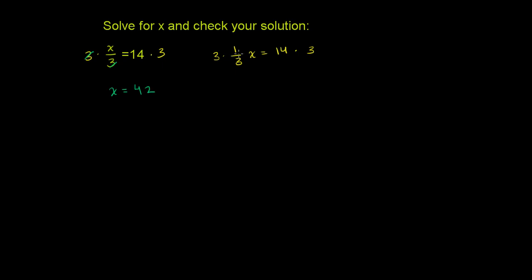So we get x is equal to 42. And the same thing would happen here. 3 times 1/3 is just 1. So you get 1x is equal to 14 times 3, which is 42.